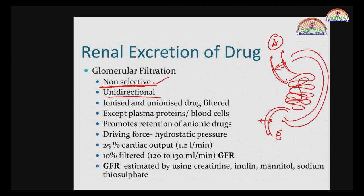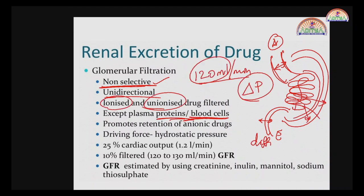Both ionized and unionized drugs can be filtered by glomerular filtration. The only things that do not get filtered are blood cells and plasma proteins like albumin, globulin — red blood cells, white blood cells, and platelets. Everything else is filtered. The GFR for a normal adult is 120 mL per minute, so within 10 minutes we have 1.2 liters of output.